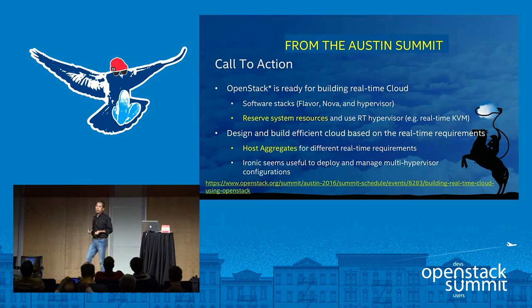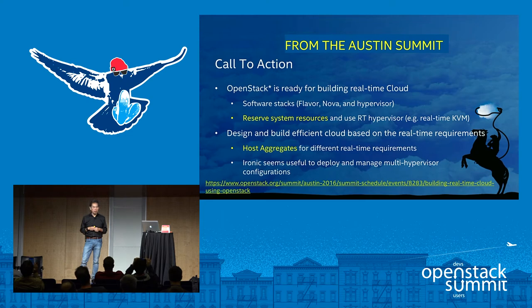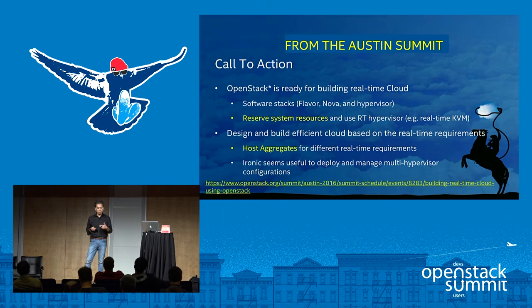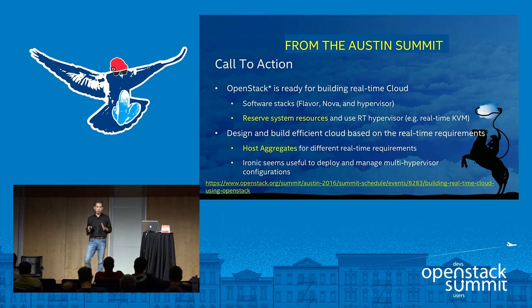This is what I presented at the last Austin summit. To refresh your memory, first of all, OpenStack is actually ready to build a real-time cloud. We have a software stack — for example, Nova flavor and then hypervisor. We even have a real-time hypervisor, like real-time KVM. And of course, you can use containers if you use a real-time Linux, for example.